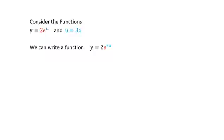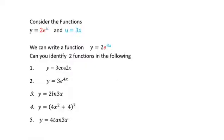In the following activity, we split the function into two: find y in terms of u and u in terms of x. For number one, y = 3cos(2x). We know the derivative of cos(x) from the formula sheet, and 2x is a linear function. So let u = 2x, giving y = 3cos(u) where u = 2x.